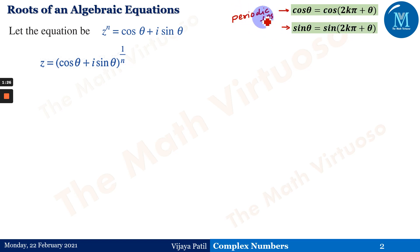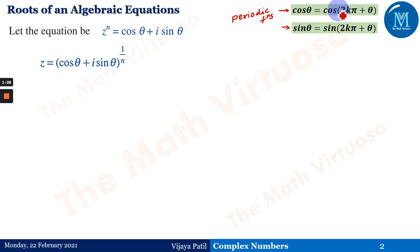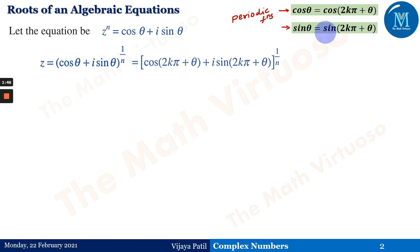Periodic functions means: after every 2kπ, the value of cos θ and cos(2kπ + θ) will remain the same. That means after every 2kπ, the value of cos θ or sin θ will repeat — and that is what is known as periodic functions.